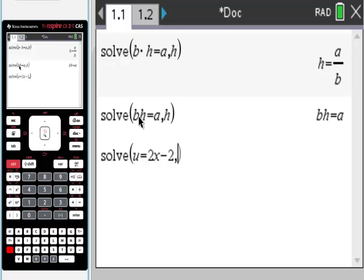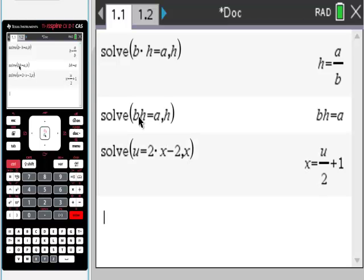I'm just going to solve for x. So comma x. Remember, after you put in what you want, comma, then put in the variable you want it to solve for. Super important. And there's your answer. Hopefully we're good.